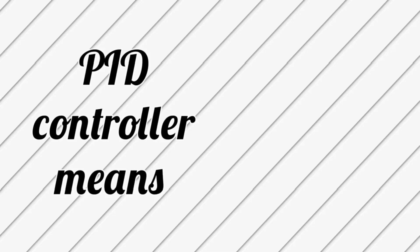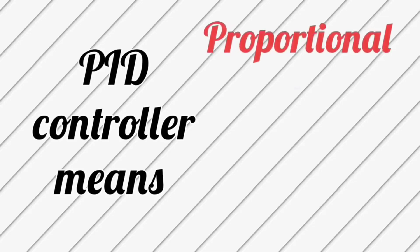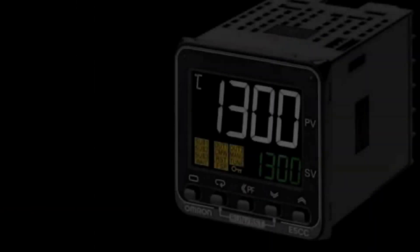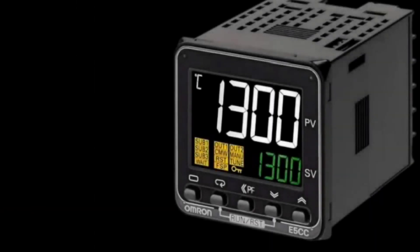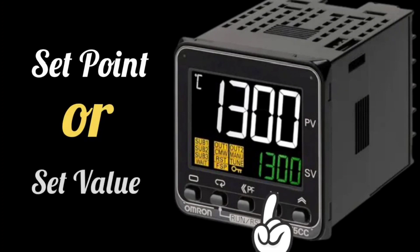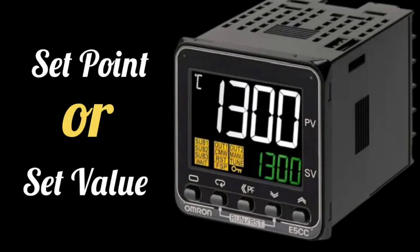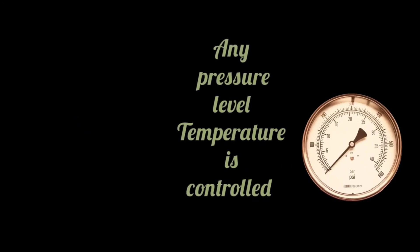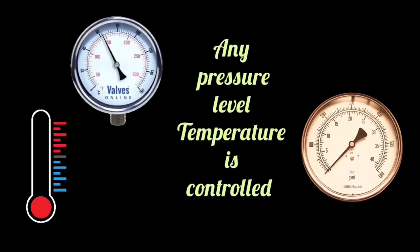PID controller means Proportional Integral Derivative controller. In a PID controller, you can see the set point or set value — SP or SV is written on it. This is the value at which pressure, temperature, and level are kept.